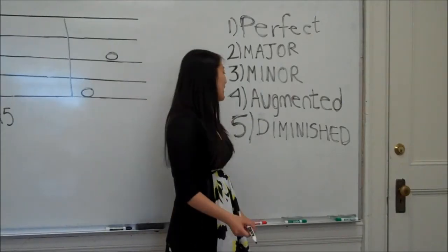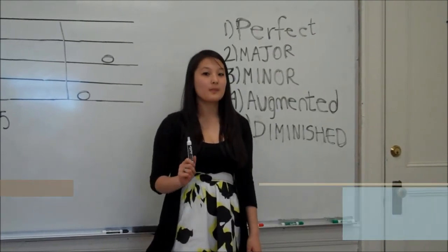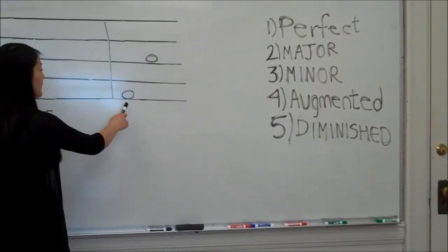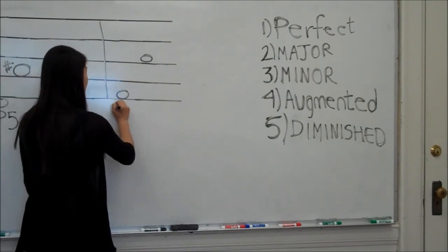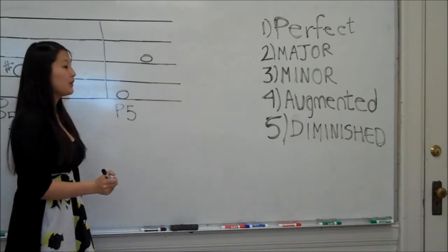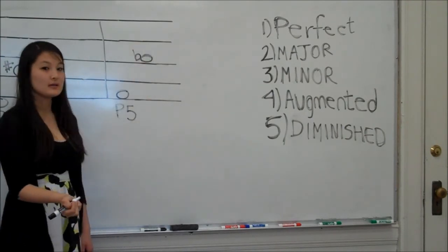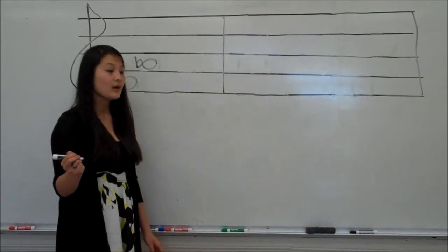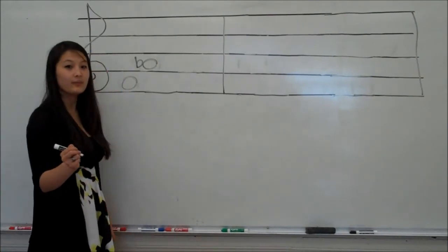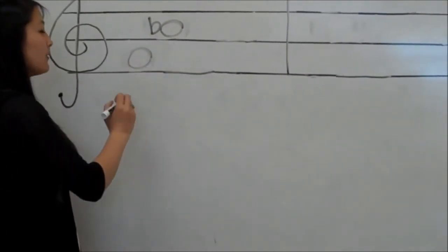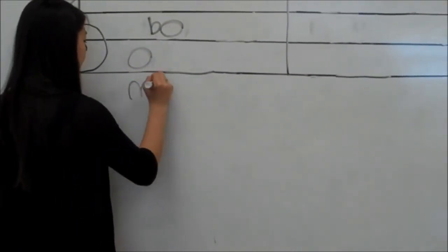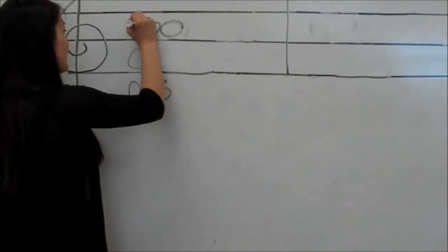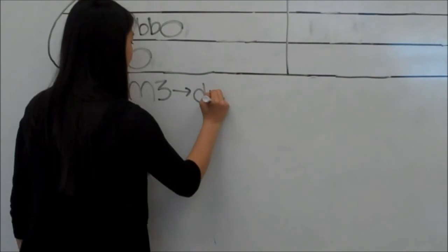The next type of interval is the diminished interval, and this is when a perfect or a minor interval has the top note lowered half a step. So, going from an F to a C would normally be a perfect fifth, but if we lowered the C to a C flat, this would make it a diminished fifth. Another example of a diminished interval would be if we had an F to an A flat, which would be a minor third, and then if we lowered the A another half step, it would become A double flat, making it a diminished third.